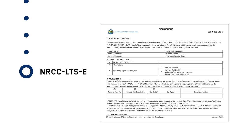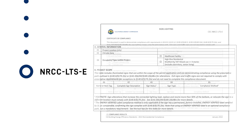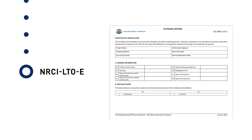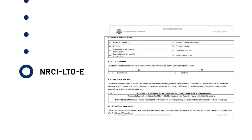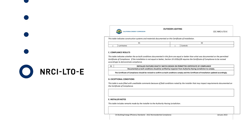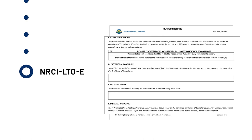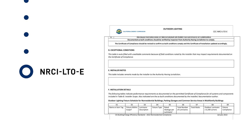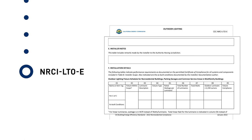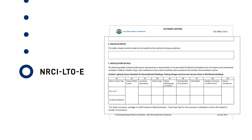Projects with illuminated signs must document compliance information on Certificate of Compliance NRCC-LTS-E. The installation contractor must document each required installed control device on the Certificate of Installation NRCC-LTS-E. If an Energy Management Control System, also called an EMCS, or Advanced Lighting Control System is used to meet the requirements, system information is also documented on form NRCC-LTS-LE.